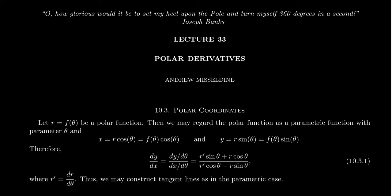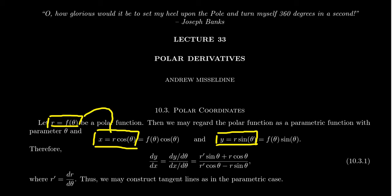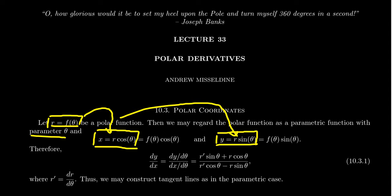How one does that comes from what we discussed before. As we switch from polar coordinates to Cartesian coordinates, we get x equals r cosine theta and y equals r sine theta. Since r is itself a function of theta, we insert f of theta for r, giving us x equals f of theta times cosine theta and y equals f of theta times sine theta. That way we can view polar functions as parametric equations associated to the parameter theta.